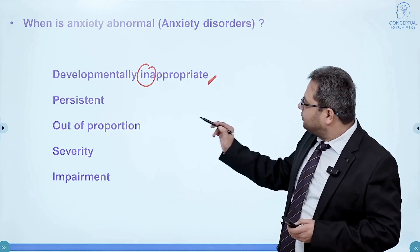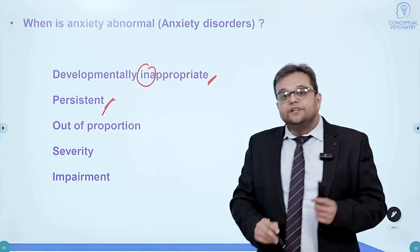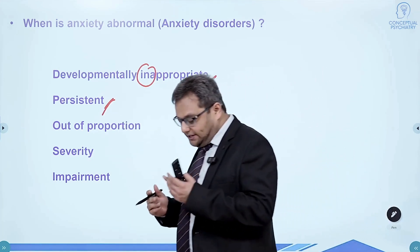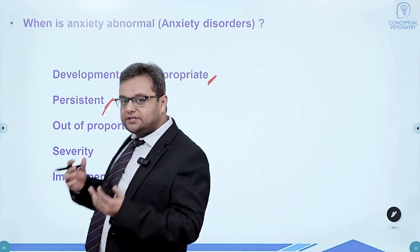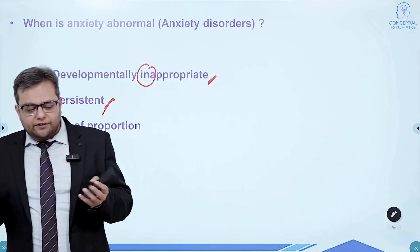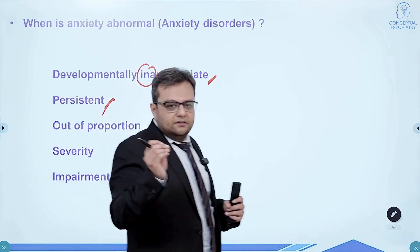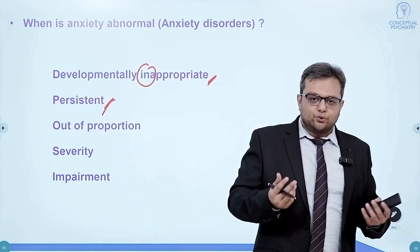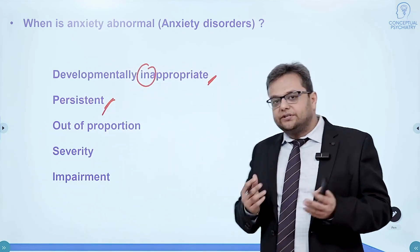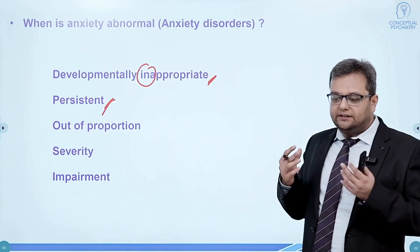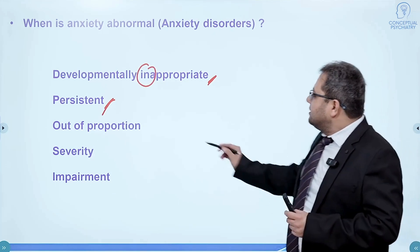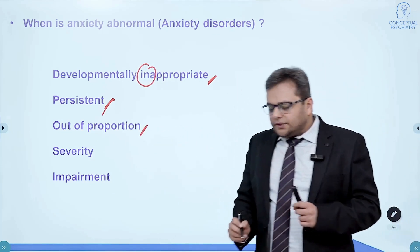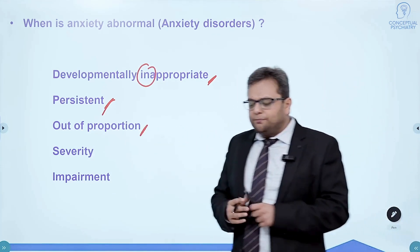Anxiety becomes abnormal when it is persistent. Most criteria as per DSM specify 6 months; ICD says several months. There are certain additional features when it comes to children, but mostly it is 6 months — which is a significant amount of time. Being out of proportion is also important.